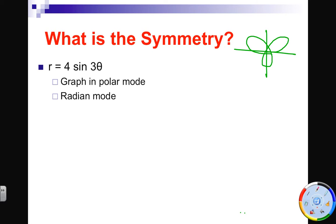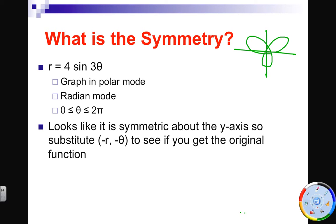Oh, and by the way, do this in radian mode. Go from 0 to 2 pi on your t or theta min, theta max, that sort of idea. Okay, so theta goes from 0 to 2 pi. So, because we think it's symmetric about the x-axis, we verify this algebraically by substituting in negative r and negative theta to see if we get the original function.